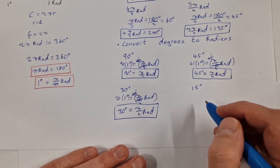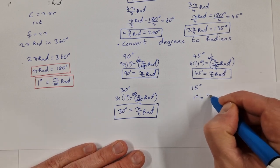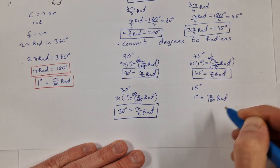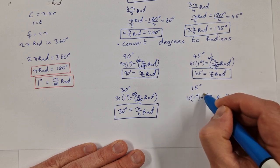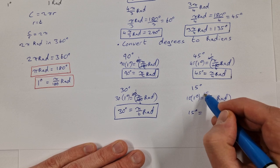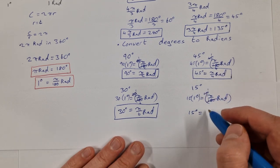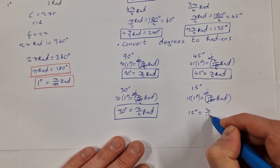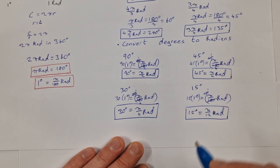Last one: 15 degrees. Starting with 1 degree equals π/180 radians, I multiply by 15. That gives 15 degrees equals 15π/180. 15 into 15 goes once and 15 into 180 goes 12 times, so 15 degrees equals π/12 radians.